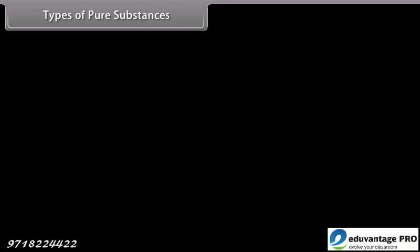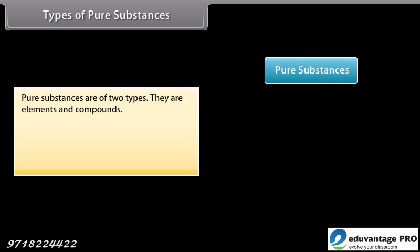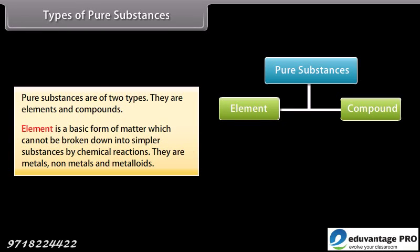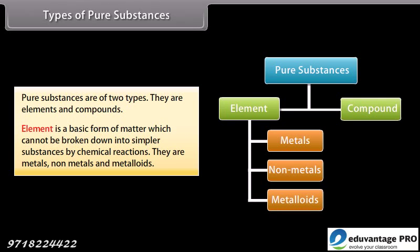Types of pure substances: Pure substances are of two types. They are elements and compounds. Element is a basic form of matter which cannot be broken down into simpler substances by chemical reactions. They are metals, non-metals, and metalloids.